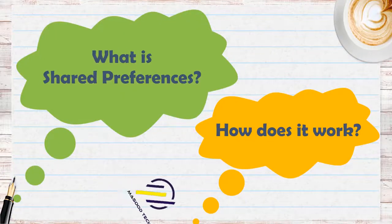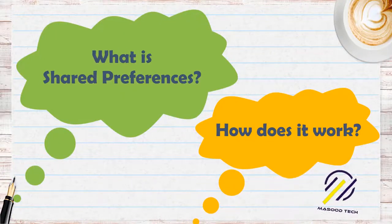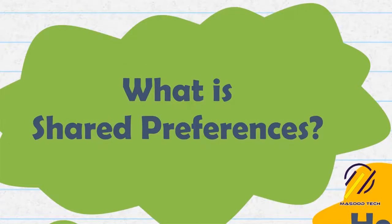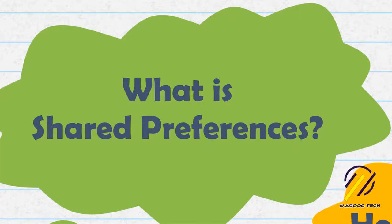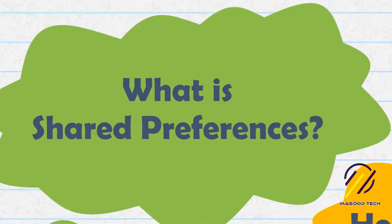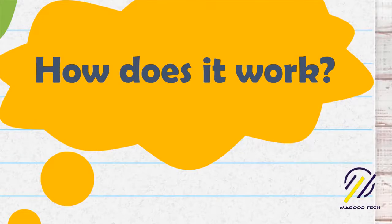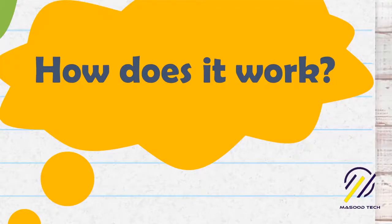Hi guys, in today's tutorial I'm going to show you how to use Shared Preferences in Android. Shared Preferences is really handy to use if you have a small collection of key values that you'd like to save. You can use it to store things like the username and whether or not they have dark mode selected — little things you'd want to keep while the user is in your app. How it works is you create a Shared Preferences object that points to a file containing the key value pairs, and it provides methods for you to read and write.